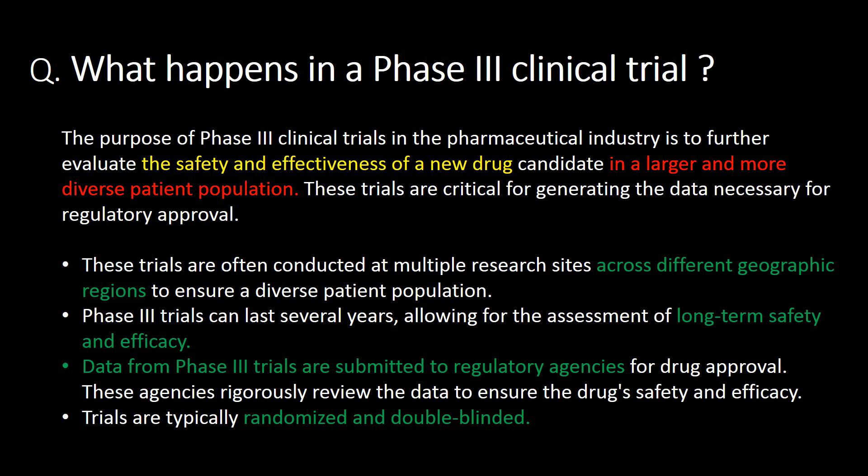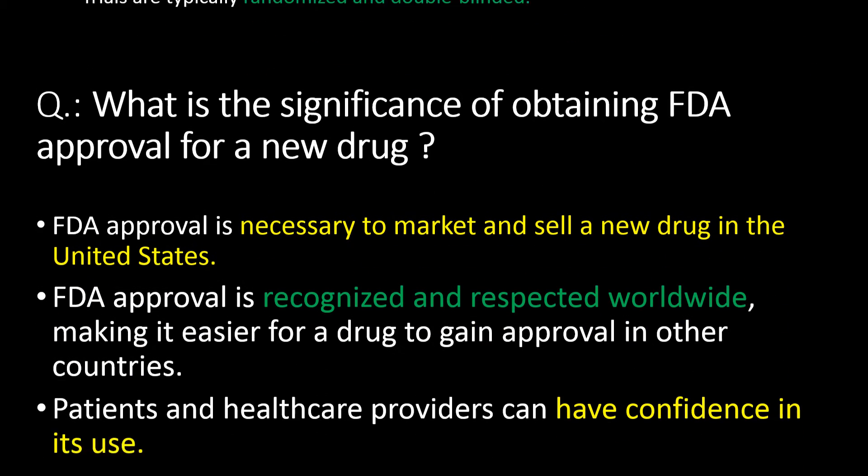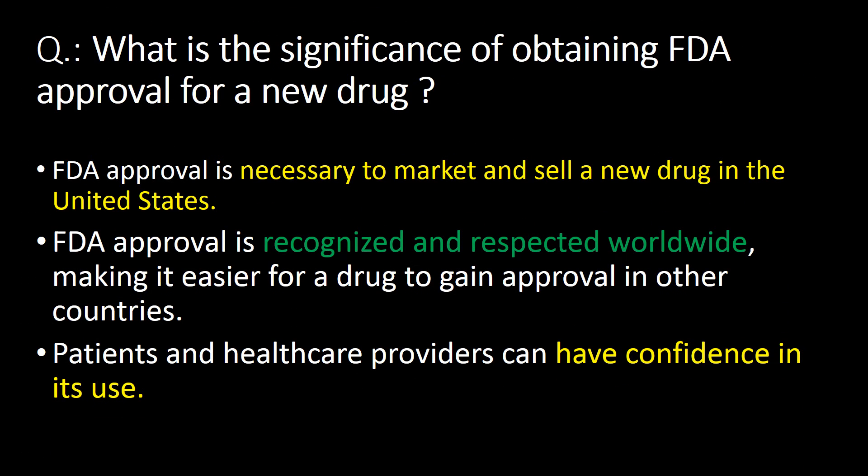Phase 3 trials are typically randomized and double-blinded. What is the significance of obtaining FDA approval for a new drug? FDA approval is necessary to market or sell a new drug in the United States. FDA approval is recognized and respected worldwide, making it easier for a new drug to gain approval in other countries. Patients and healthcare providers can have confidence in its use.